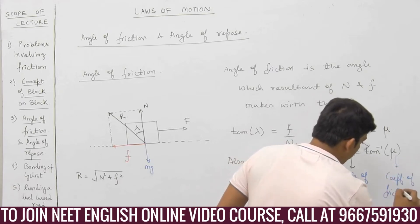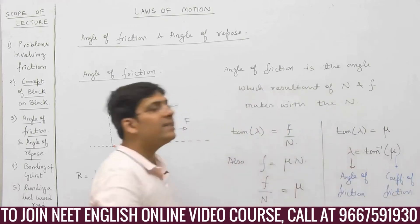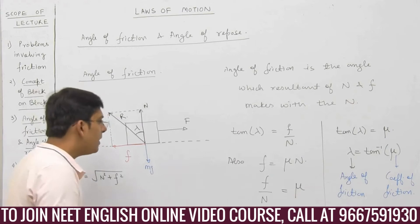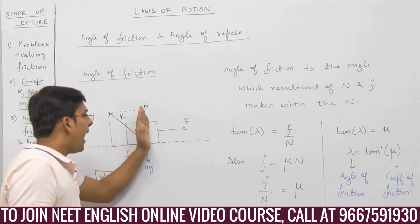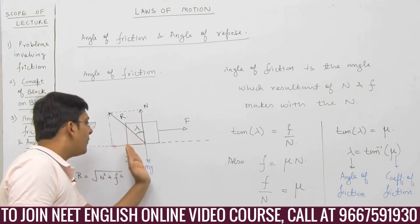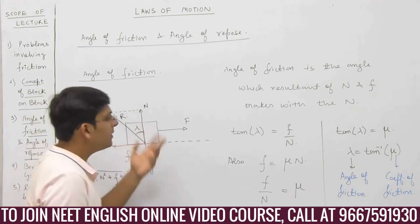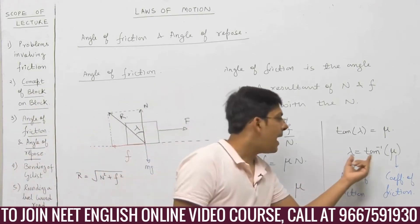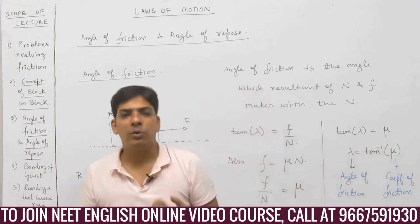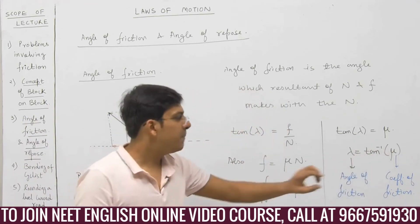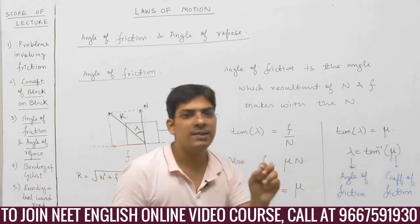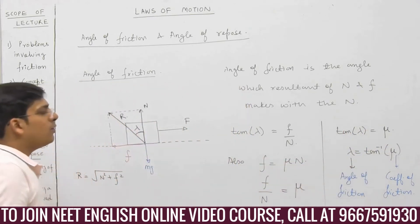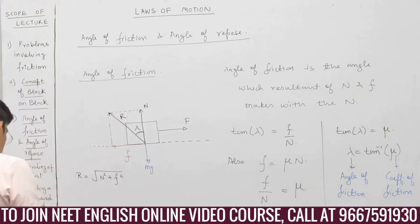So what is angle of friction? Angle of friction is nothing but the angle which the resultant of friction and normal reaction makes with the normal reaction. The formula for angle of friction is tan inverse mu, where mu is the coefficient of friction which depends on the nature of surfaces in contact. So kindly note down, dear students, this is angle of friction.